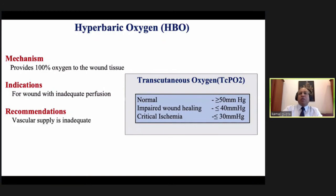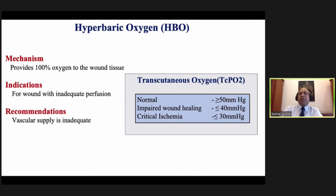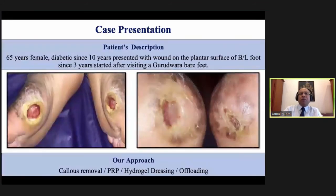Coming to HBO (hyperbaric oxygen) — TcpO2 measurement is very important before hyperbaric oxygen. If TcpO2 is less than 30 mmHg, that is an absolute indication for HBO.